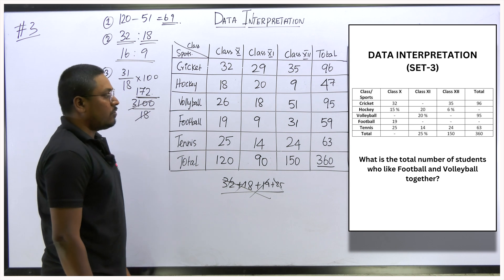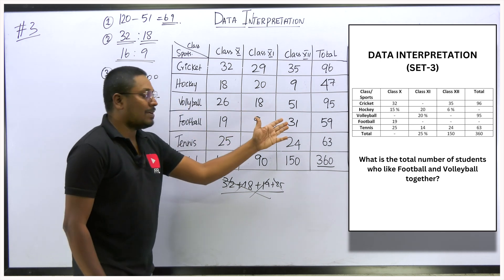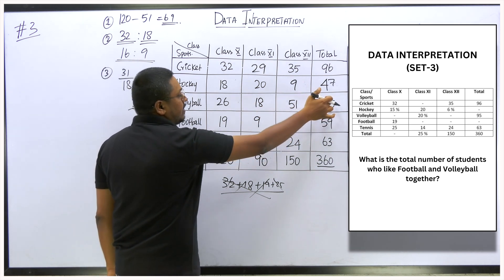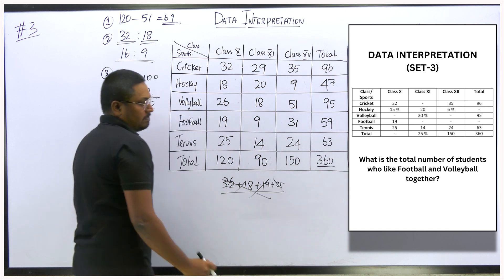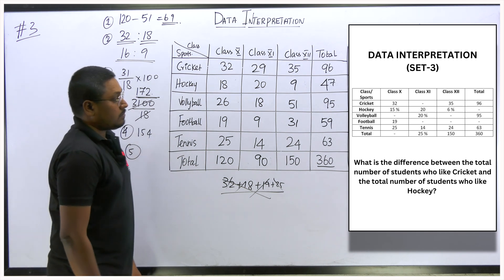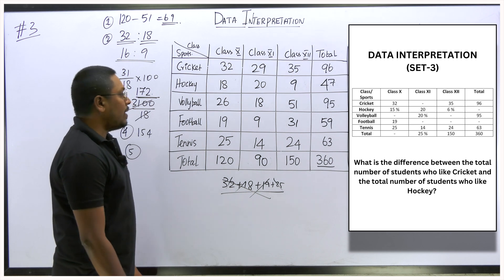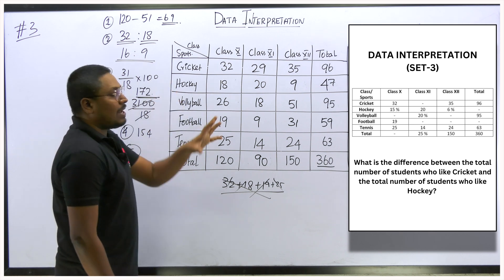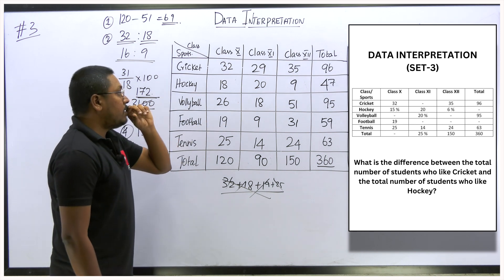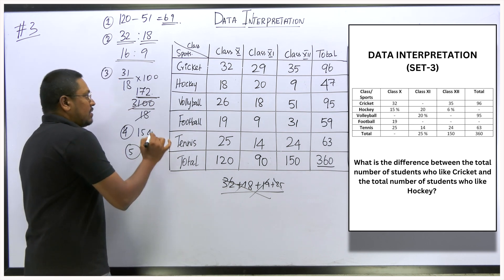Question 4: Total number of students who like football and volleyball together — we know the row totals, so just add them: 9 plus 145 gives 154. The answer is 154. Question 5: What is the difference between total students who like cricket and total students who like hockey? Cricket total is 96, hockey total is 47. The difference is 96 minus 47 equals 49.